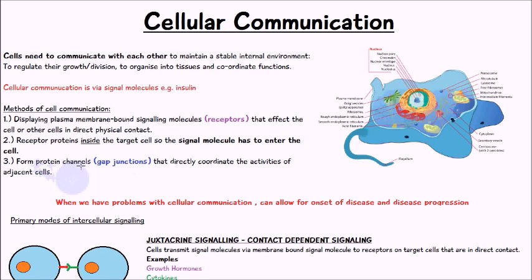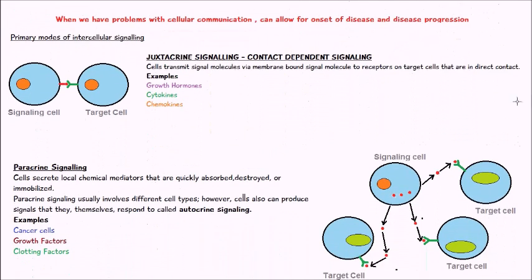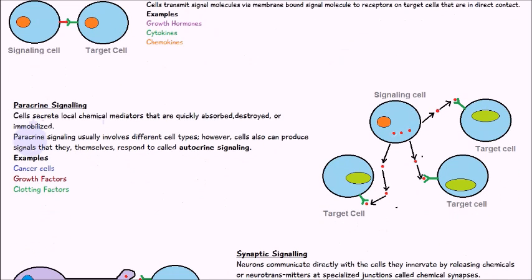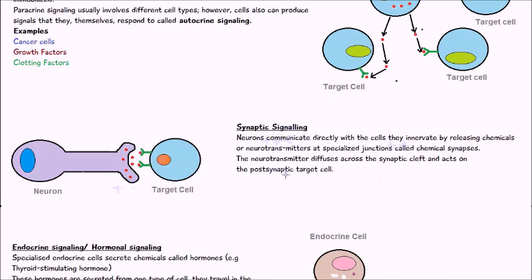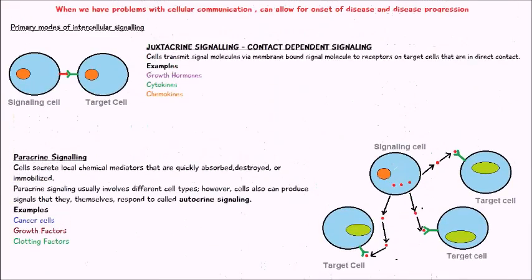Another type involves protein channels called gap junctions that directly coordinate the activities of adjacent cells. When we have problems with cellular communication, this can allow for the onset of disease and disease progression. There are four primary modes of intercellular signaling: juxtacrine or contact-dependent signaling, paracrine signaling, synaptic signaling, and endocrine signaling.